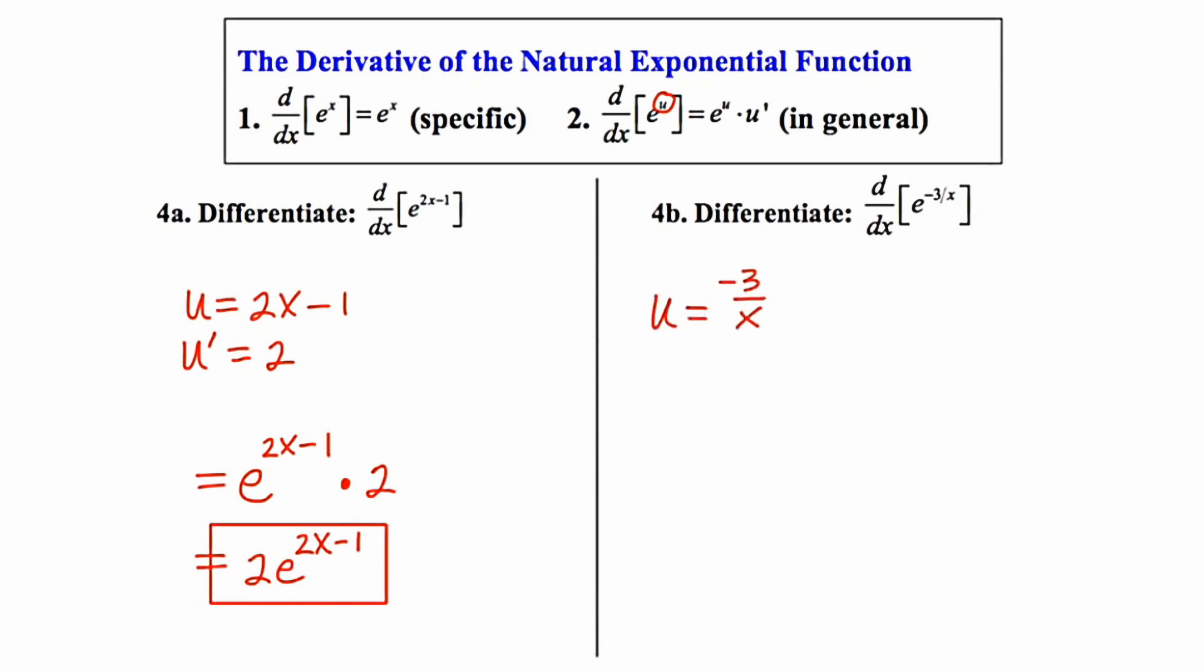Now I'm ultimately going to have to take the derivative of this. So I'm going to make it more calculus friendly by rewriting it as negative 3x to the negative 1. Now when I go to take the derivative of this, I'm going to notate it in the following way.